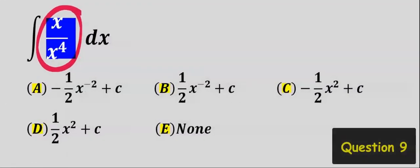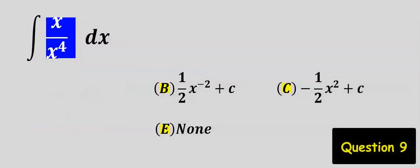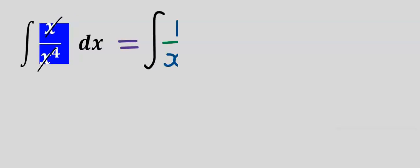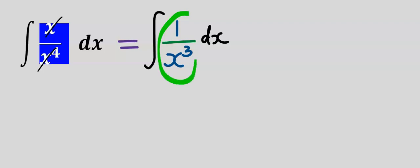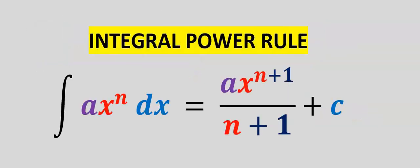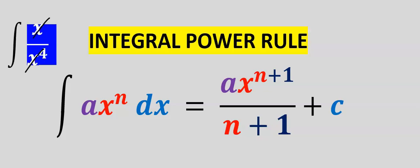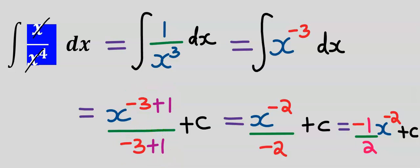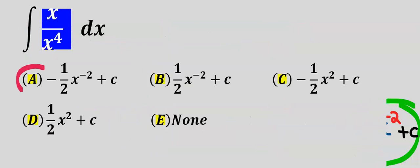Let's integrate this next function. The first step is that x will cancel one of the x terms, giving us 1 divided by 3 to the power of 3. Next, we apply the law of indices, then integrate using the power rule, adding our increment. This becomes our final result. From the options our answer is a.